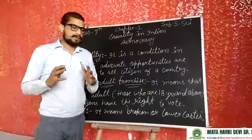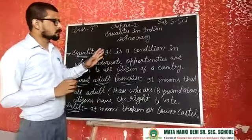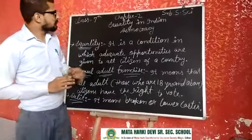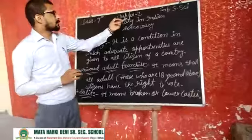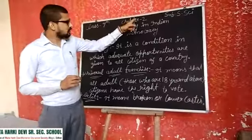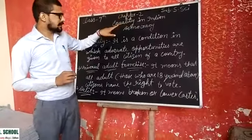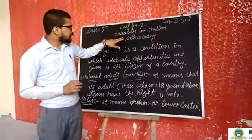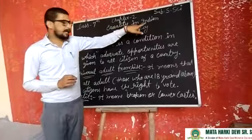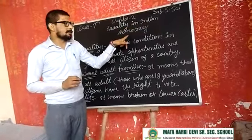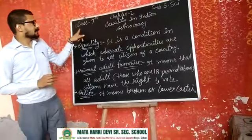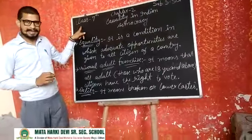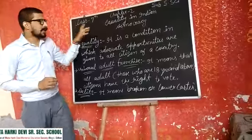So today we are going to talk about chapter number 2nd. Chapter name: Equality in Indian Democracy, Class 7th.